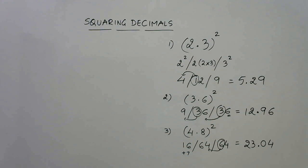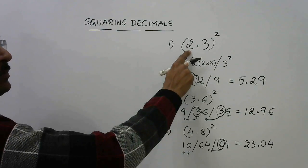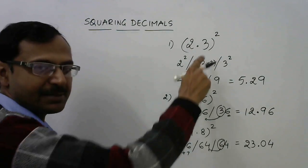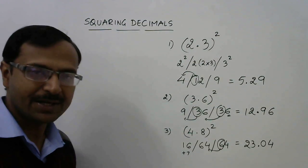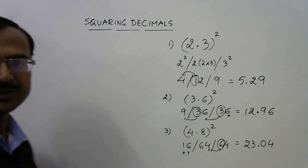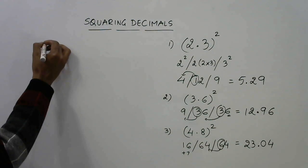Friends, I am taking only numbers which have a single digit before the decimal and a single digit after the decimal. In subsequent videos I shall take other examples as well. Let's have 3 more examples.